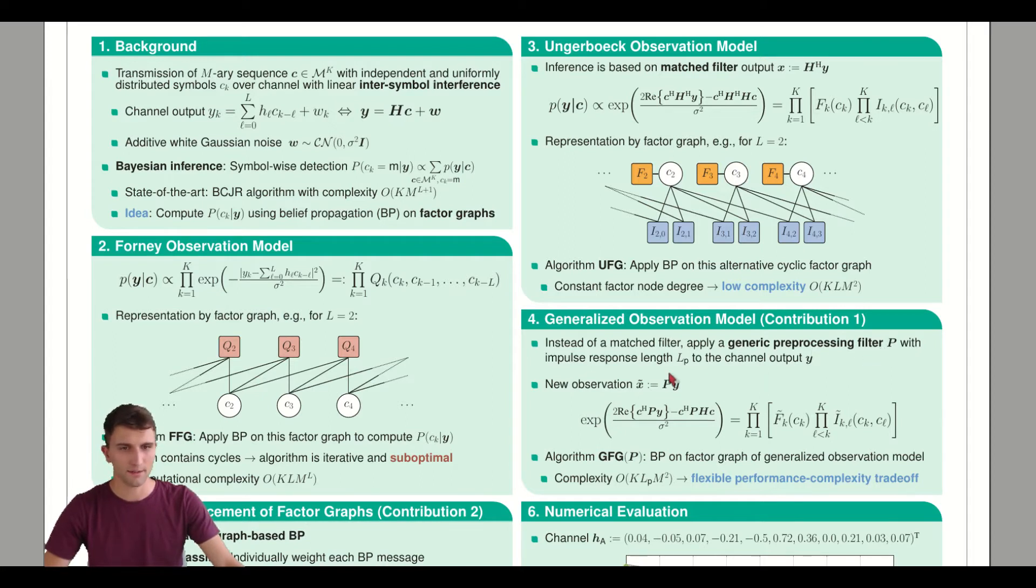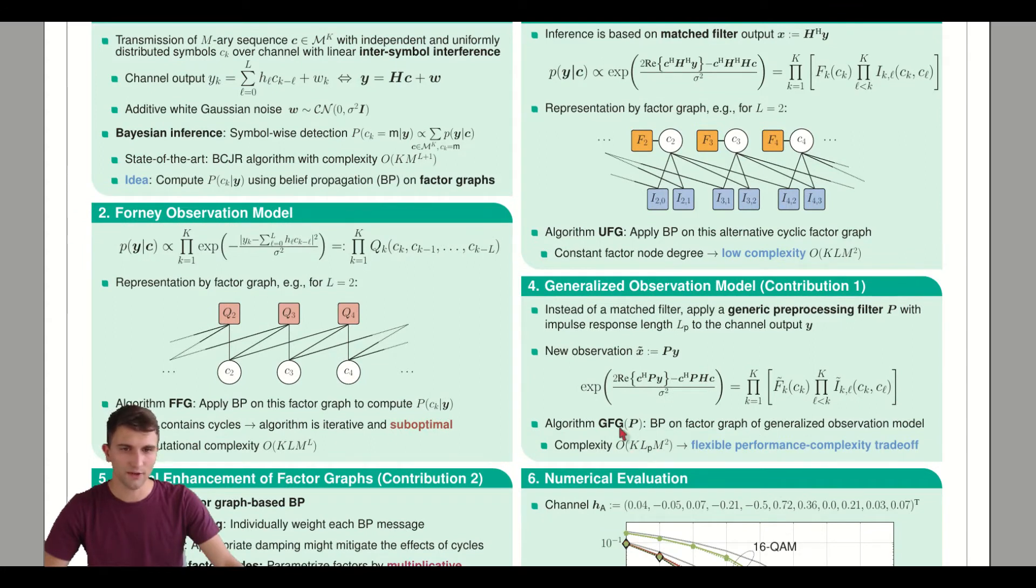We apply some generic preprocessing filter with an impulse response of length LP to our channel observation Y. The resulting factorization has the same structure as the Ungerberg model but is dependent on the preprocessor P. The factors F and I alter depending on P. We call this algorithm GFG and apply standard belief propagation on this graph. A further advantage is that by freely choosing LP, we have a flexible tradeoff between performance and complexity.